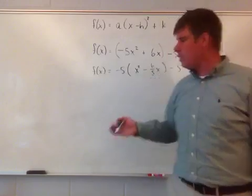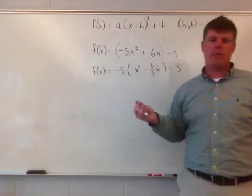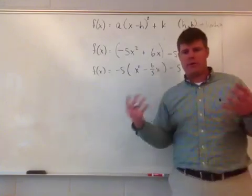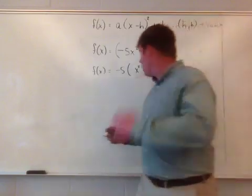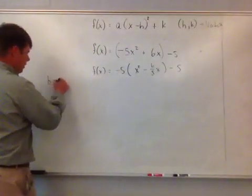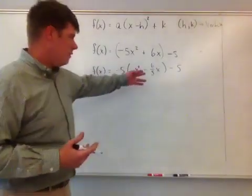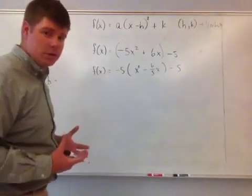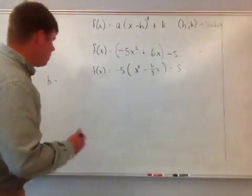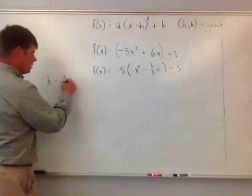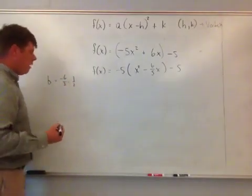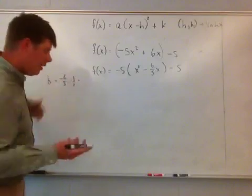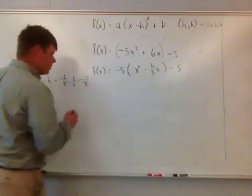To complete the square, I find the b value by taking the middle term and dividing by 2. The middle term is negative 6 over 5, so b equals negative 6 over 5 divided by 2, which is really multiplying by one half. That gives negative 6 over 10, which reduces to negative 3 fifths. So b equals negative 3 fifths.